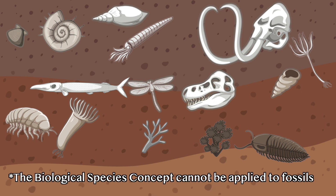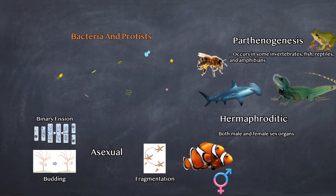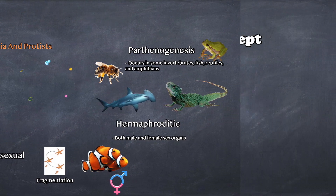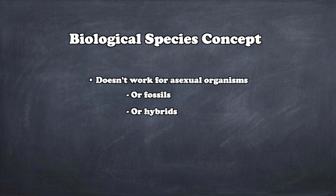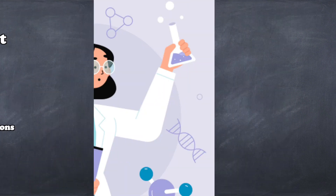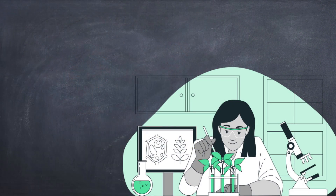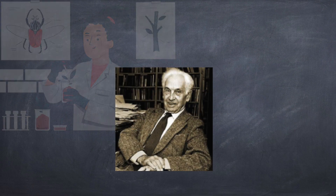So you get it — the biological species concept, despite being the concept included in most textbooks, is riddled with inconsistencies and ambiguities. So after realizing this, biologists set out to find a new, improved species concept that will blow old Ernst Mayr out of the water.